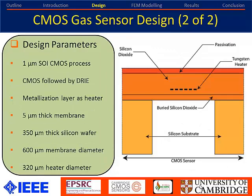The design parameters: we use a one-micron SOI CMOS process followed by a single deep reactive ion etch step from the backside of the wafer to release the membrane. The membrane is roughly five microns thick, with robustness coming from the wafer handle which is roughly 350 microns thick. The membrane diameter is around 600 microns with the resistive heaters sitting at around 320 microns.